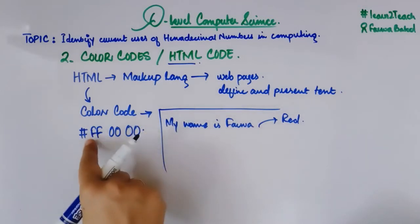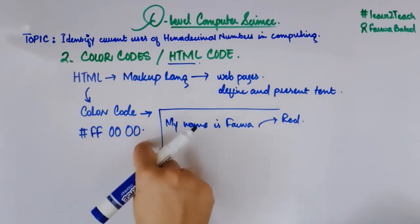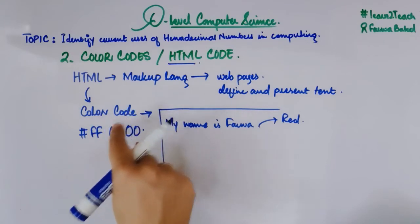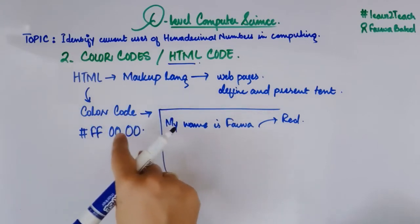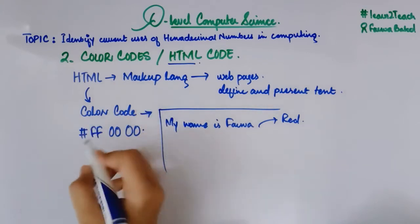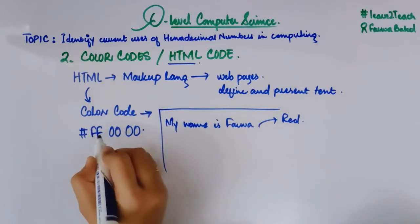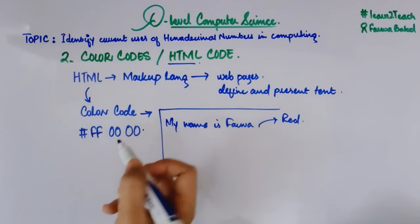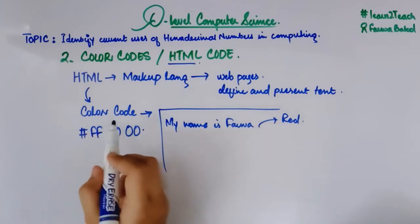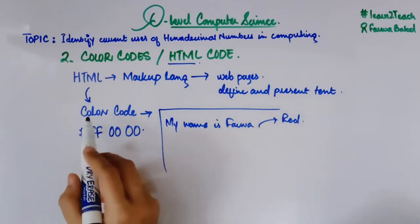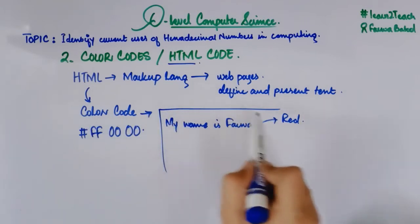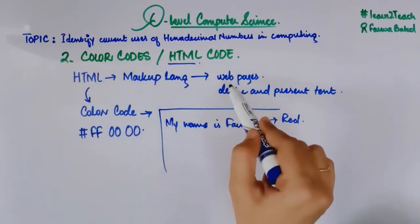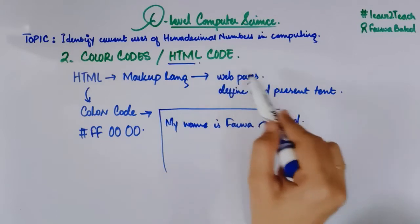In this way we have different color codes for different colors. This color code represents six hexadecimal digits — or three pairs of hexadecimal digits — in order to represent a color. This is how we use the hexadecimal number system to present color codes and define text colors in HTML markup language.